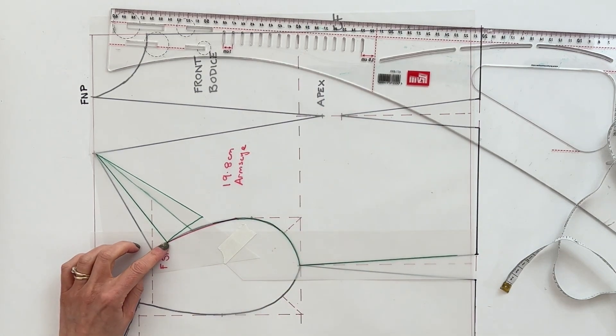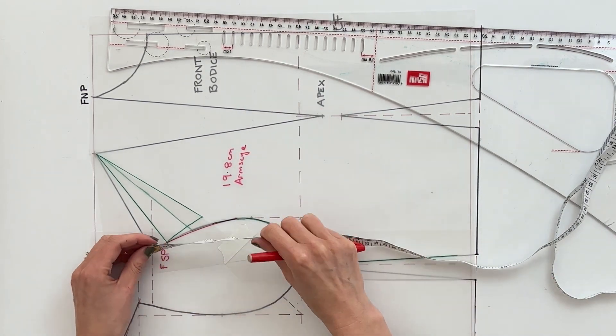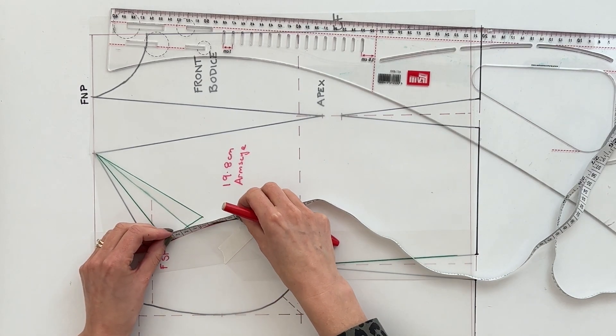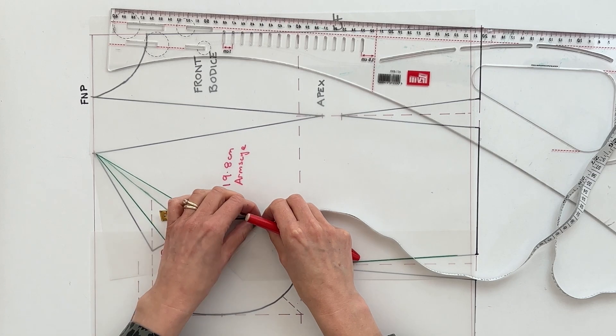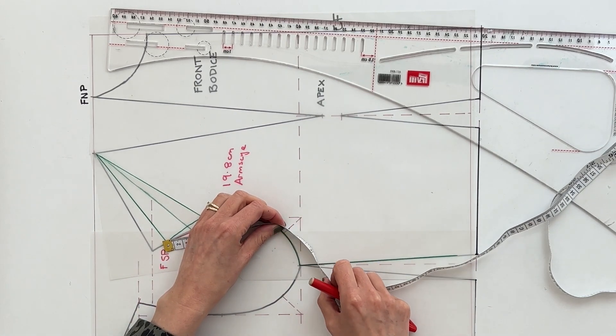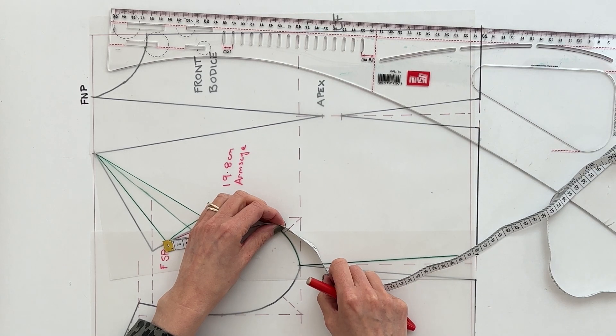Don't forget to measure it a few times if you need to. For me it works out as 19.8 centimeters. So I then want my new curve to be the same, 19.8. So I'm just going to start to measure along my red line here to make sure that my armscye stays about the same.